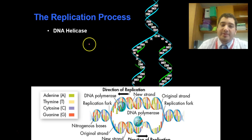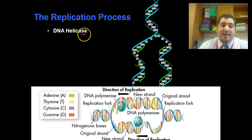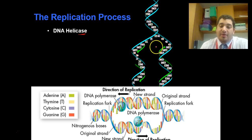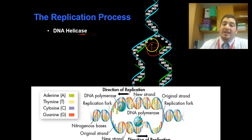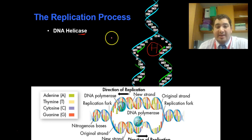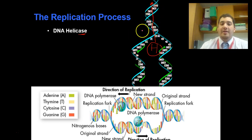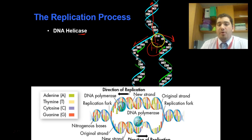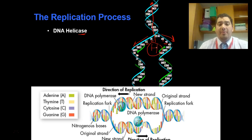Let's talk about the replication process. There are a couple of steps and crucial molecules involved. The first molecule is DNA helicase — you can tell it's an enzyme because it ends in -ase. DNA helicase is really the first step in replication. What helicase does is, like a zipper on your jacket, it unzips the DNA molecule, traveling up the middle and splitting the two strands apart. Now we have two separate strands, and since they are complementary, every G on one side has a C on the other, and every A has a T.